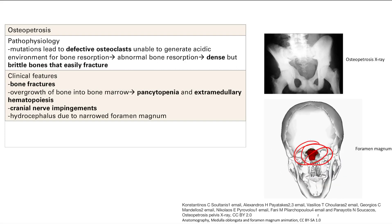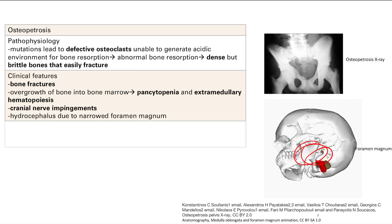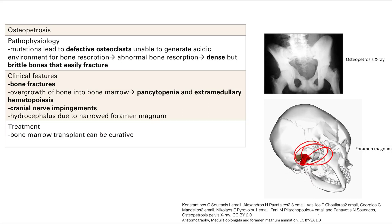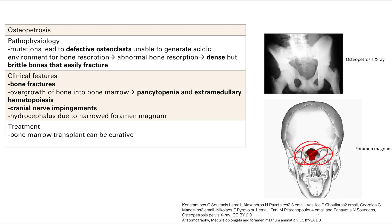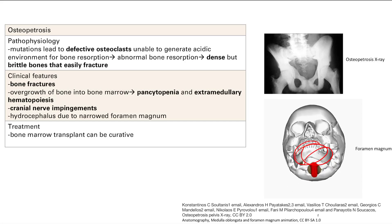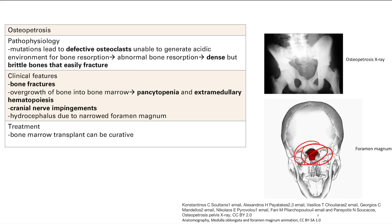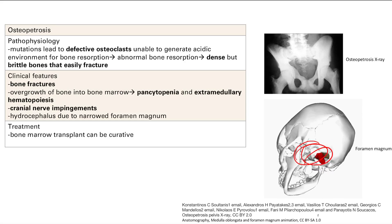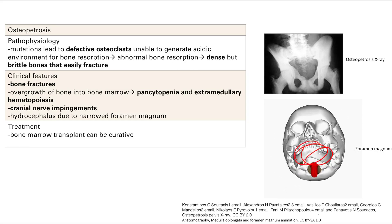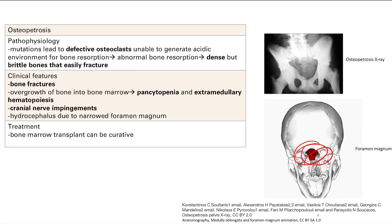The treatment here is bone marrow transplant. Remember what osteoclasts are derived from — they come from monocyte and macrophage precursors, and both of those eat stuff up. So if you replace the bone marrow, you can actually get non-defective osteoclasts, and that will correct all the pathology.